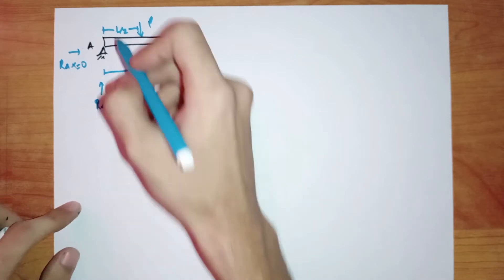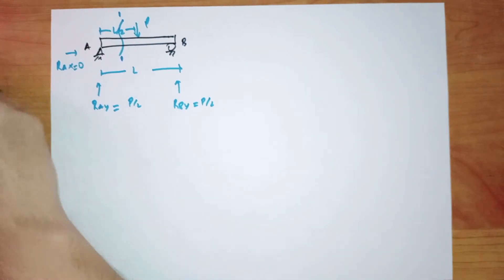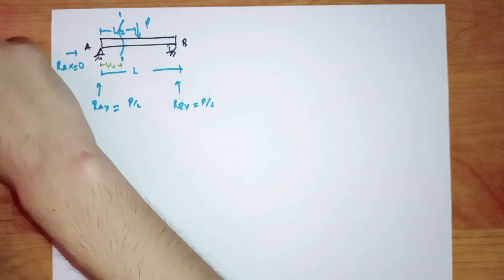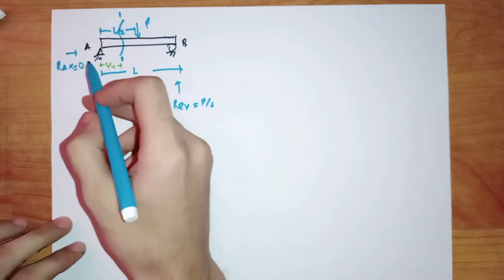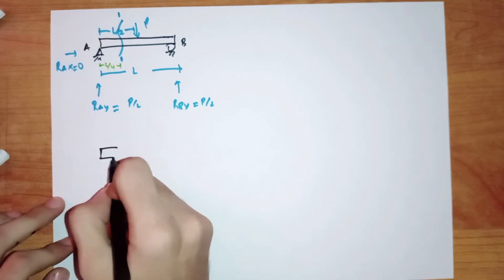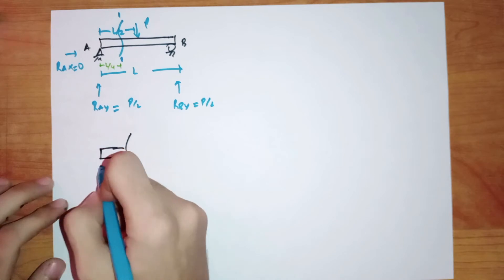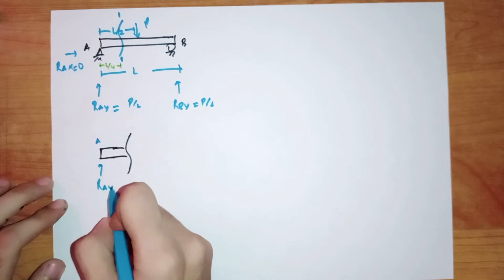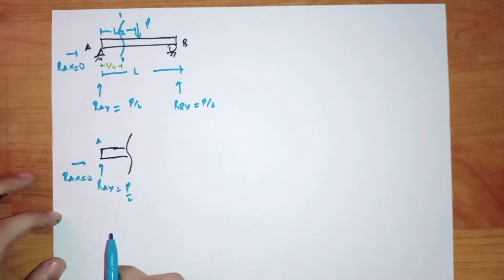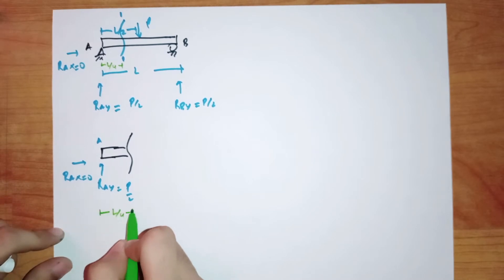Now, if I cut a section through this beam, let's call it section 1-1, and it is at a distance of L over 4 from point A. So now we have two segments, and let's take the left first segment. We have point A, the support reactions are RAY equals P over 2, RAX equals 0, and this distance is L over 4.